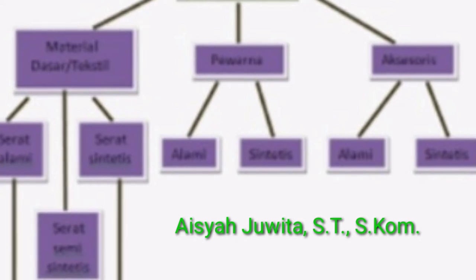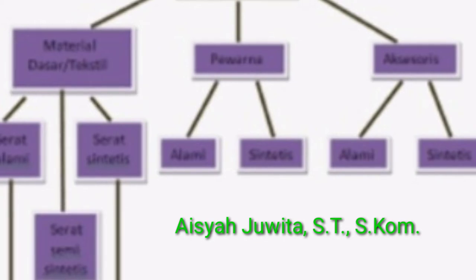Yang pertama yaitu serat. Serat alam yang digunakan untuk tekstil terdiri atas serat yang berasal dari tumbuhan, diantaranya kapas, batang rami, nanas, batang pisang. Serat alami yang berasal dari hewan seperti wol dari bulu biri-biri dan sutra dari kepompong ulat sutra.